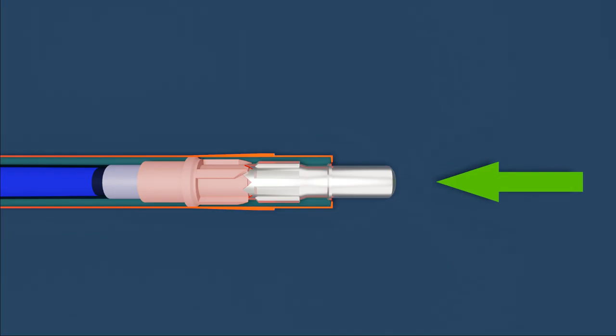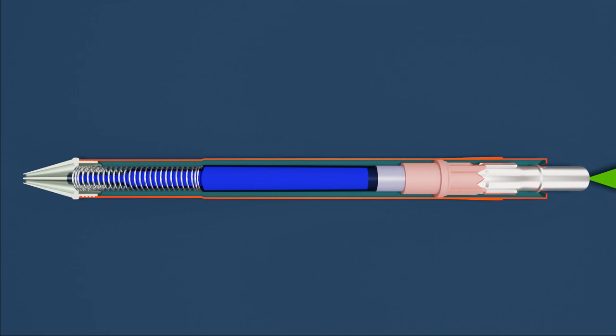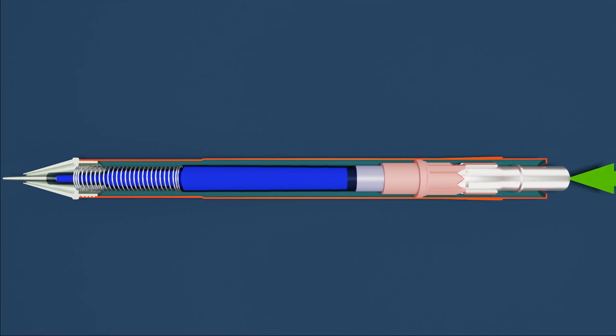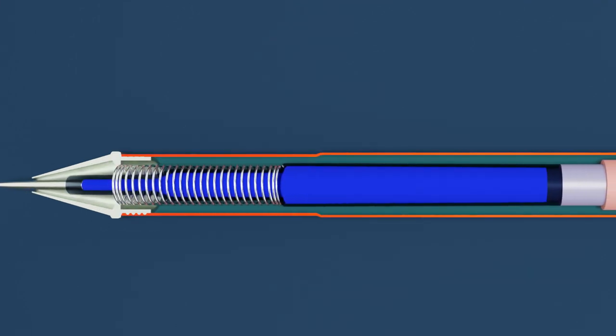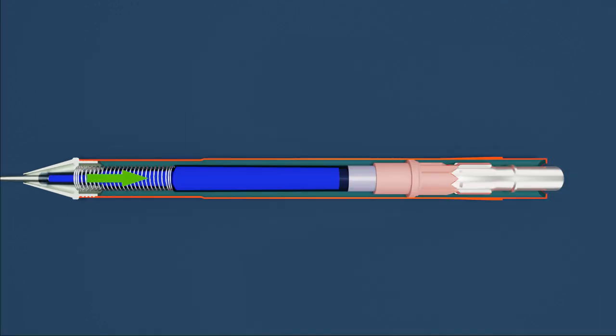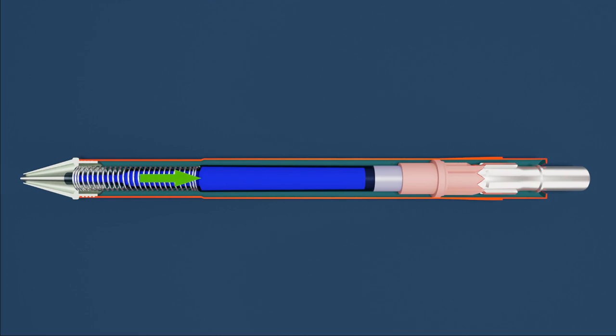When the push button is pushed from back, it pushes the thrust device, and the thrust device pushes the ink cartridge forward. And the spring gets compressed. When the push button is released, spring rebound force starts pushing the ink cartridge and other two parts backward.